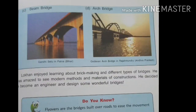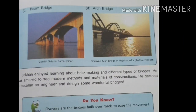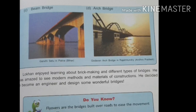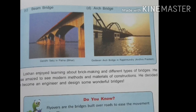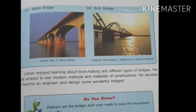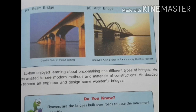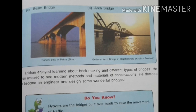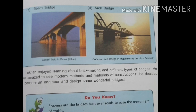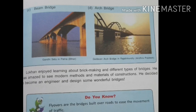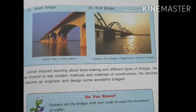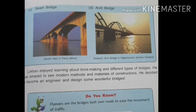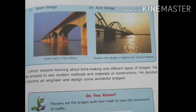The next type is the beam bridge, also known as a stringer bridge, which is supported by piers at each end. Gandhi Setu Bridge in Patna is an example of a beam bridge. Then there is the arch bridge, which is the oldest form of bridge used since ancient times — a bridge with abutments at each end and shaped as a curved arch. Godavari Arch Bridge in Rajahmundry, Andhra Pradesh is an example of such a bridge.